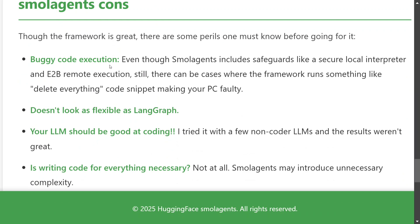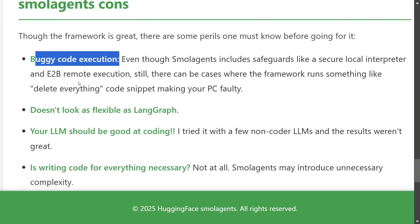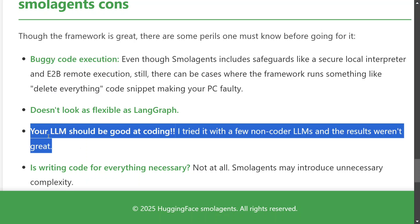There are certain issues with Smolagents you should consider. Buggy code execution is a risk — if the AI agent by mistake writes code to delete all files, that could be dangerous. There are safeguards like E2B remote execution and a secure local interpreter, but it can still be risky. It is not as flexible as LangGraph. Your LLM should be good at coding since it writes code for everything — a general LLM may not give the best results. Also, writing code for everything isn't always necessary — if you ask it to write a blog, it will write code for that too, which doesn't always make sense.